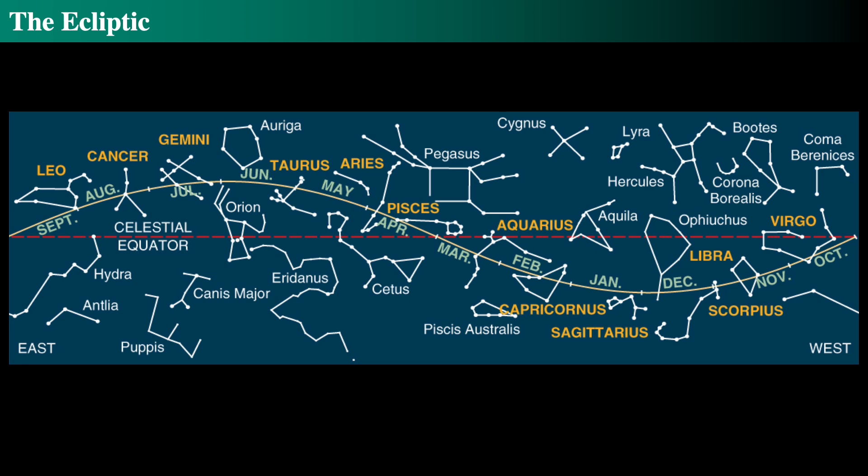The zodiac are the constellations through which the sun passes on its path around the ecliptic. So we have the celestial equator, which is the projection of the Earth's equator out into space; we have the ecliptic, which is the path that the sun takes in the sky; and the zodiac are the constellations through which it passes.